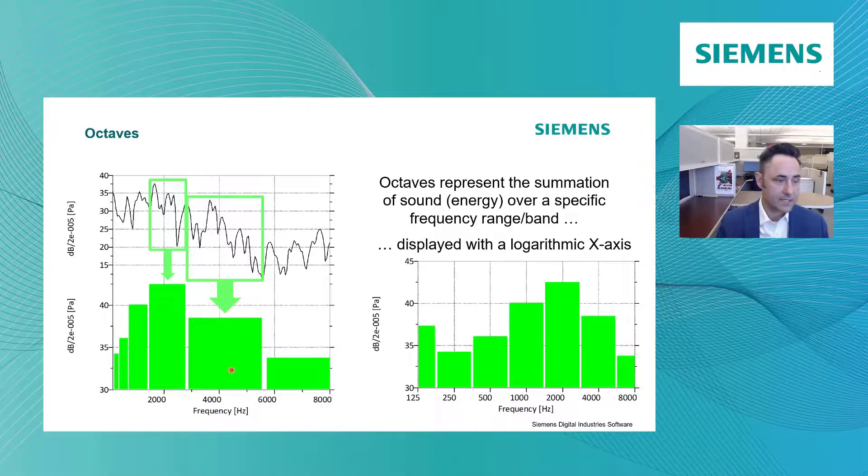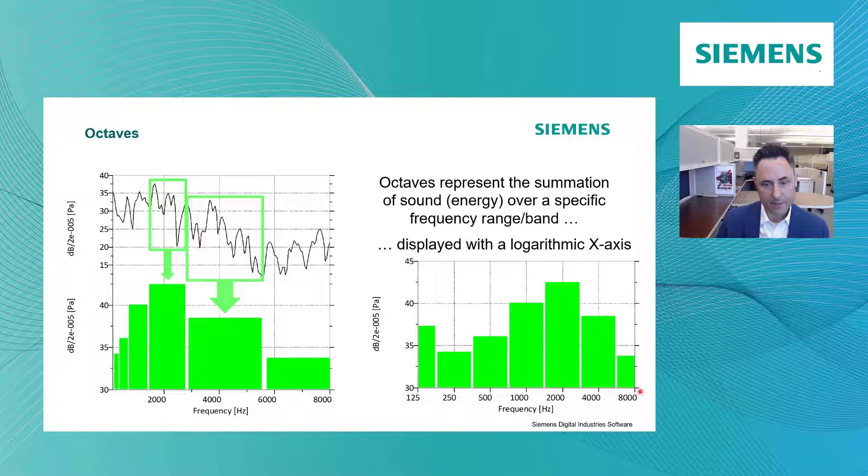So instead of plotting this on a linear axis like we have over here, we plot it on a logarithmic axis. It's where you see every tick mark that's equally spaced is actually doubling in frequency.